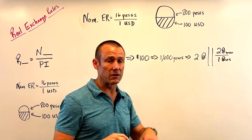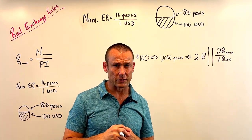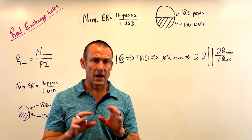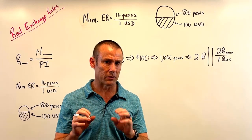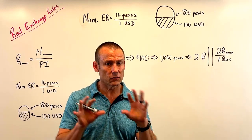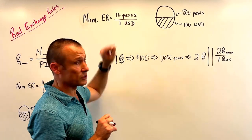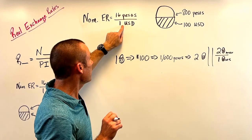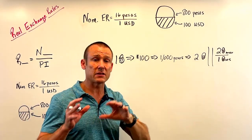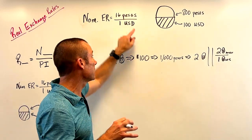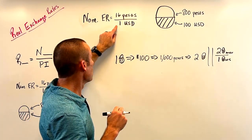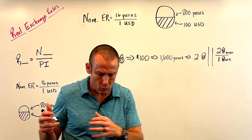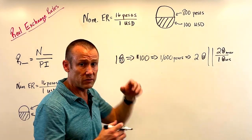We can represent that as two market baskets in Mexico for one market basket in the United States — and remember, they're the same exact market basket. That's the rate at which we're exchanging goods and services. I like to think of real exchange rates slightly differently. Let's start with the nominal exchange rate: one USD gets you 16 pesos — that's the value in nominal, meaning currency, terms.